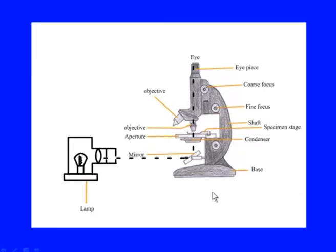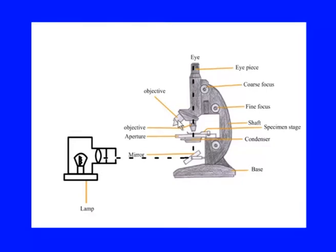The condenser lens forms a very fine focused beam of light onto the specimen to avoid any stray light that could produce a diffused image. There is always a diffusing screen before the condenser so that the image of the light source is not formed at the specimen. All lenses — condenser, objective, and eyepiece — are corrected for various aberrations.